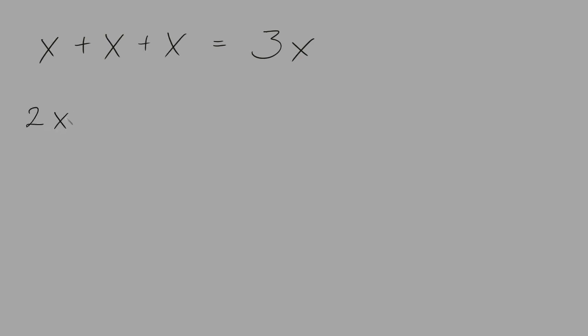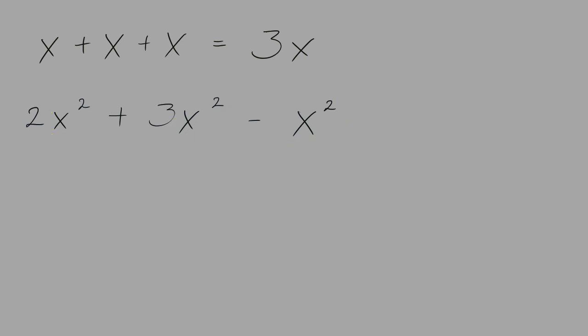2x squared plus 3x squared subtract x squared. In this example there are three terms with the same variable and exponent — x squared in all three terms. This means that they can be combined, so you can add or subtract the coefficients and then keep the same variable and exponent.